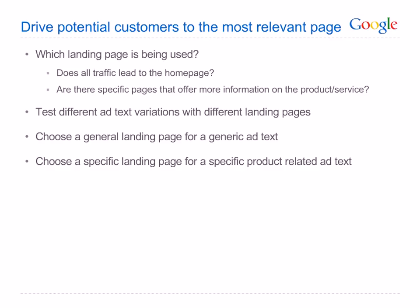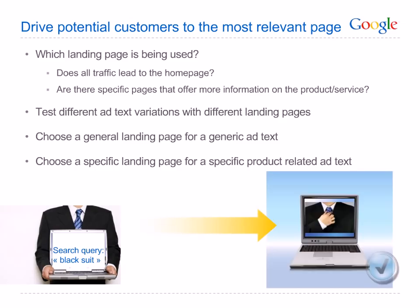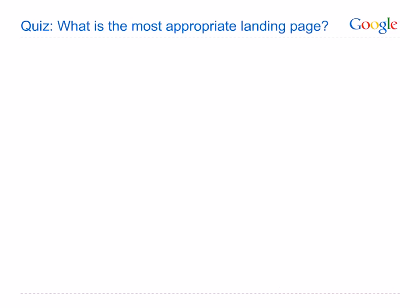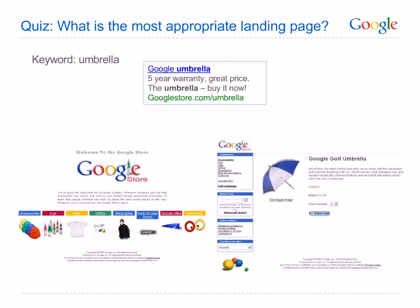For example, if a user is searching for a black suit, they'll be more likely to buy if directed to the landing page with black suits instead of searching the whole website. Quiz: a user searches on the keyword 'golf umbrella' and sees a compelling ad text on this topic — which of the two landing pages would be more appropriate and likely to lead to a purchase, the one on the left or the one on the right? Answer: the one on the right.